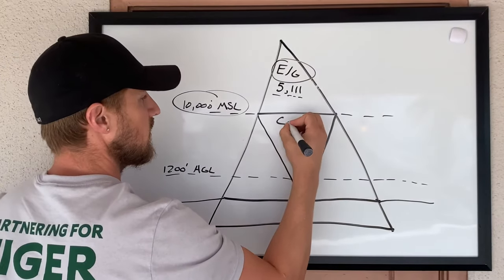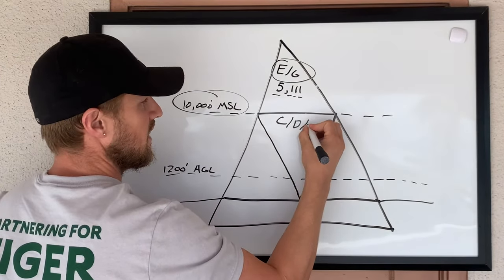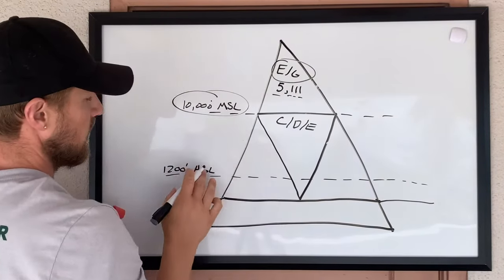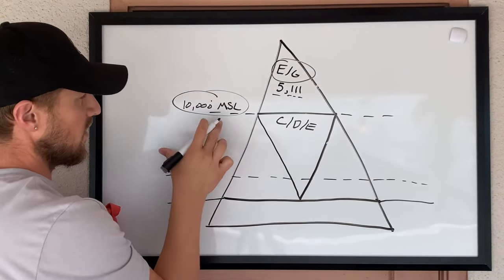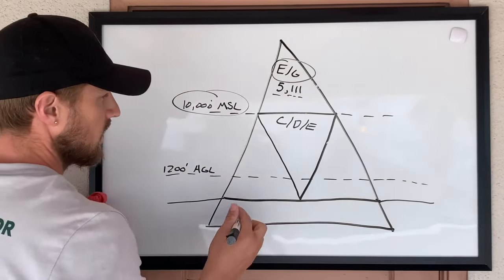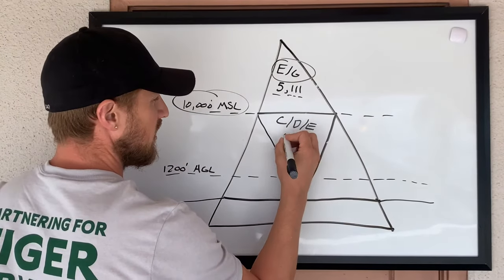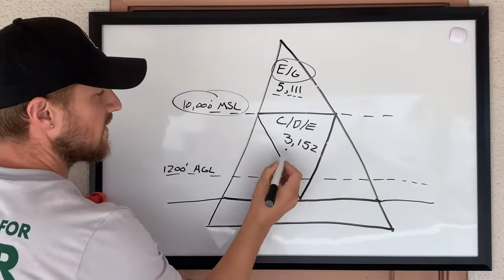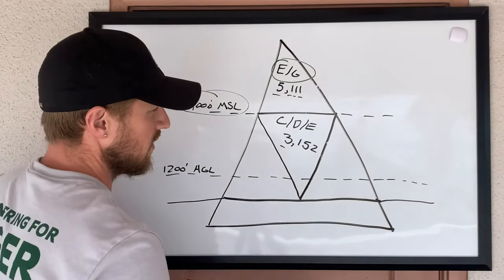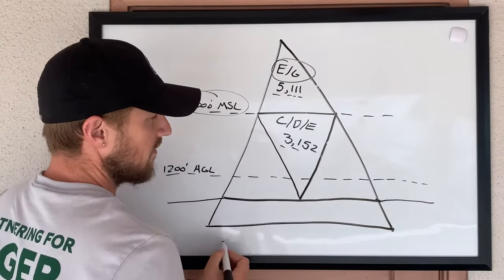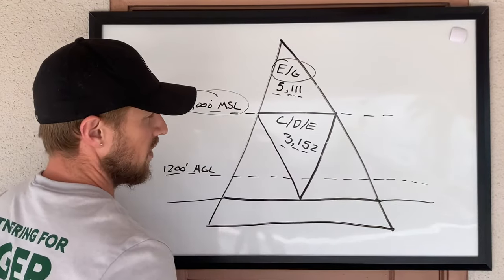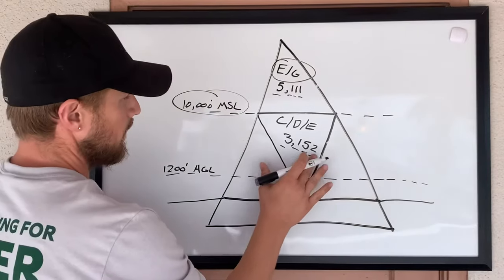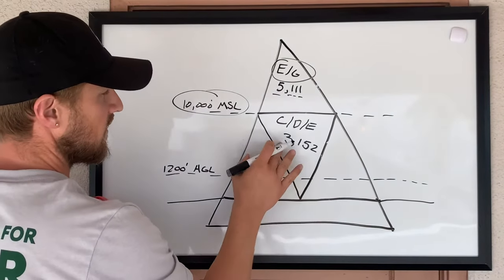The next triangle I draw is this one, the middle one: C, D, and E. This represents Class Charlie, Delta, and Echo from 1,200 feet AGL to 10,000 feet MSL. And here this one is going to be 3-1-5-2. So that's three statute miles visibility, thousand feet above, five hundred feet below, and two thousand feet horizontal distance from clouds.